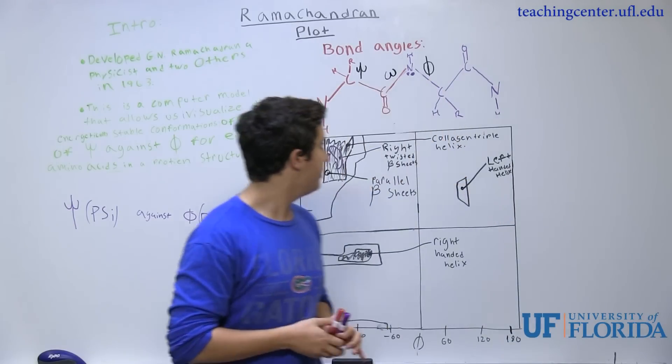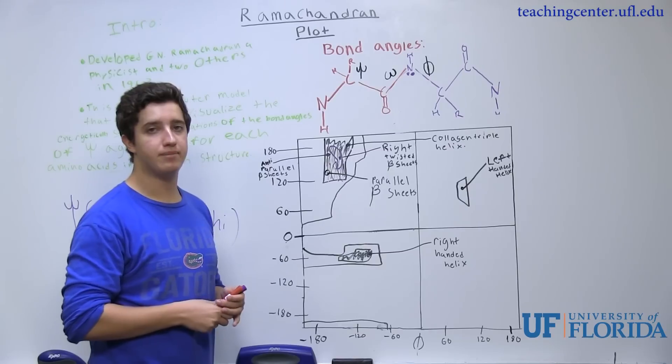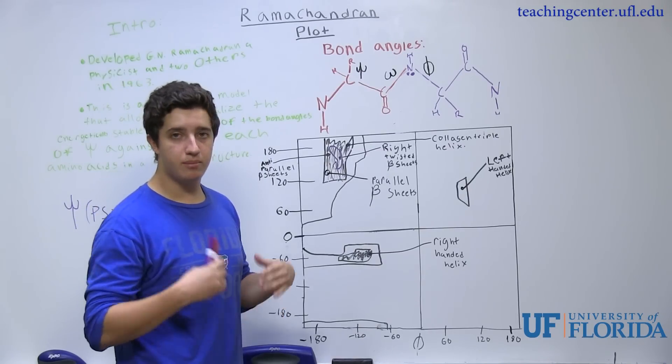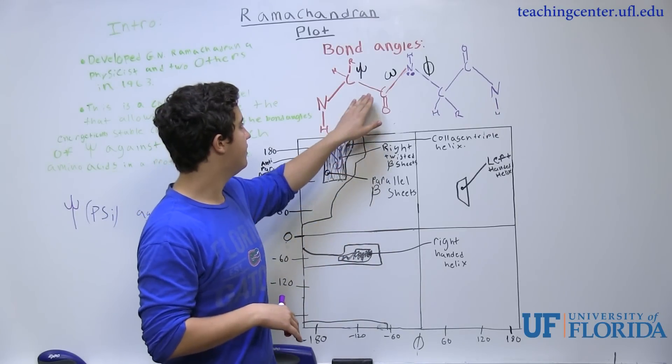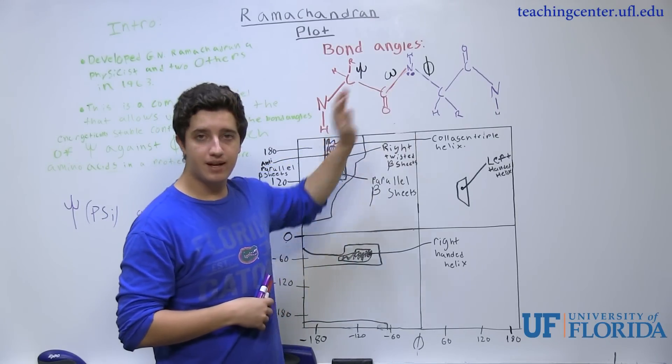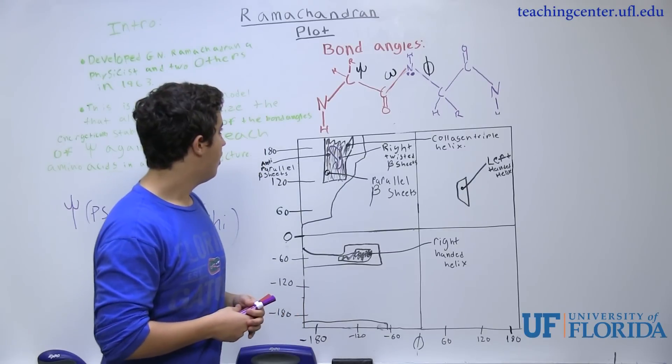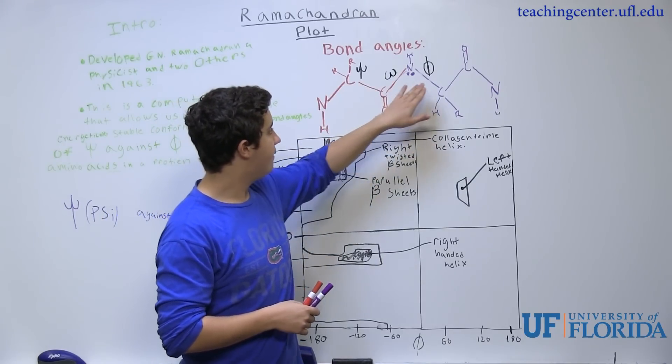Over here, we have a two amino acid residue long peptide chain. The bond that's going to be connecting these two amino acids is going to be the peptide bond. The peptide bond will be denoted by the Greek symbol omega, along with psi and phi bonds.